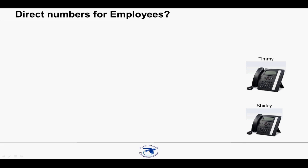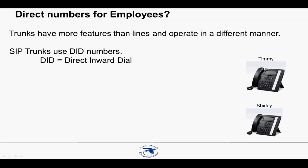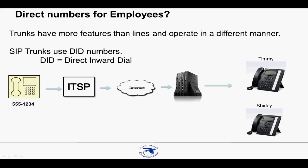Now let's take a look at the same scenario using SIP trunks. SIP trunks have more features than lines and operate in a different manner. SIP trunks use DID numbers — DID stands for Direct Inward Dial. DID numbers are not line dependent; they do not need a unique pair of wires from the phone company for each number. Instead, they are sent with signaling information so that your phone system knows what number was dialed. For instance, let's say someone calls Timmy's private number. Once they dial 555-1234, that number is routed from their phone company to your ITSP, who then sends the call via the internet to your phone system, which can tell that the calling party dialed 555-1234 and routes it to Timmy's phone.